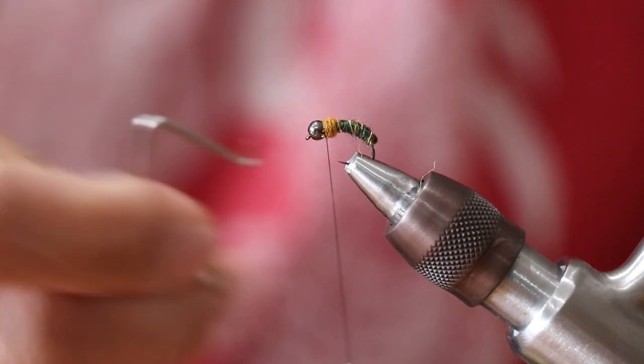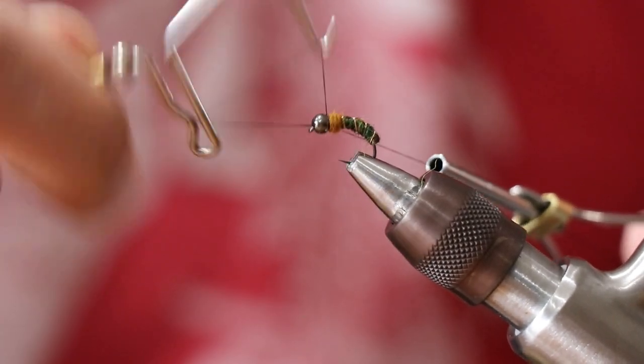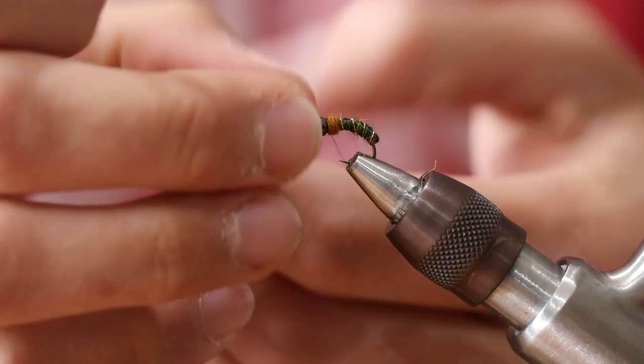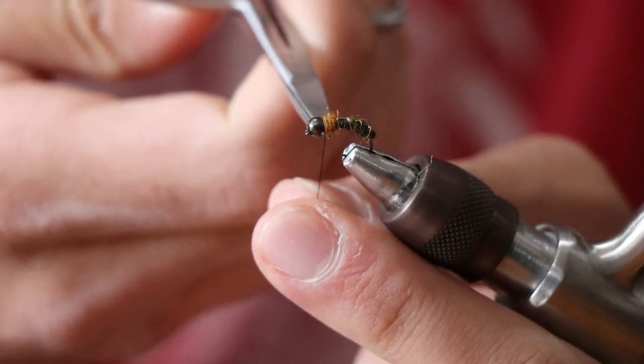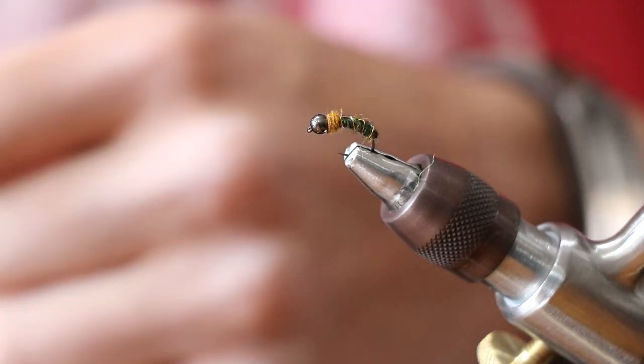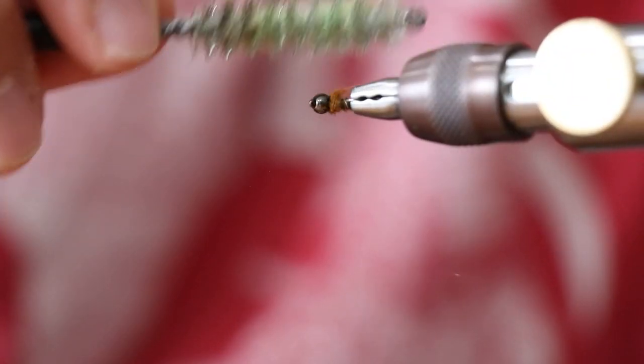Then we're going to just do a nice easy whip finish. Do about three turns, three or four, doesn't really matter a whole lot. Make sure that's cinched down well, trim off our excess, and then I'm just going to get whichever preferred dubbing brush you want.